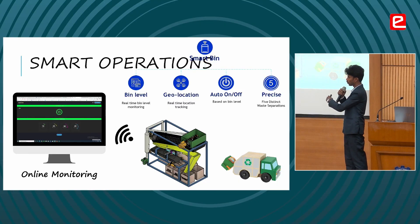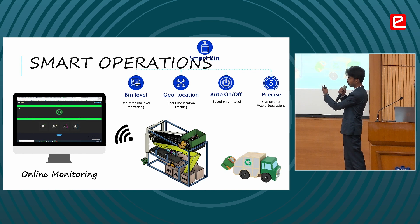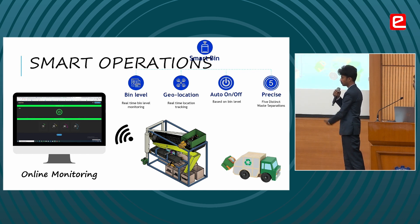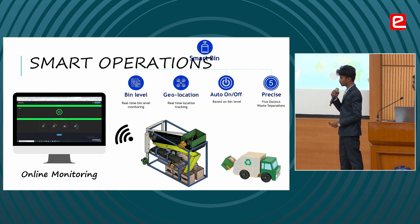We have an online monitoring system that lets us monitor how much each of the five bins has been filled. The machine also turns off automatically when any one of the bins has been filled to one hundred percent.